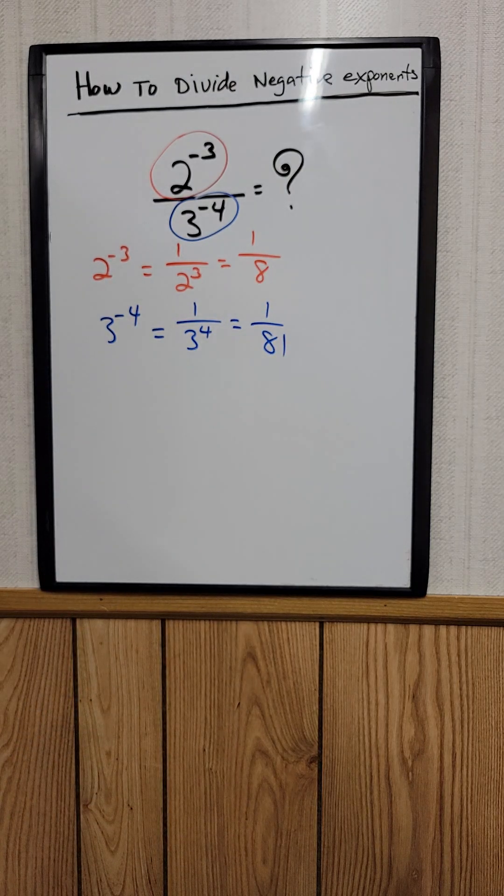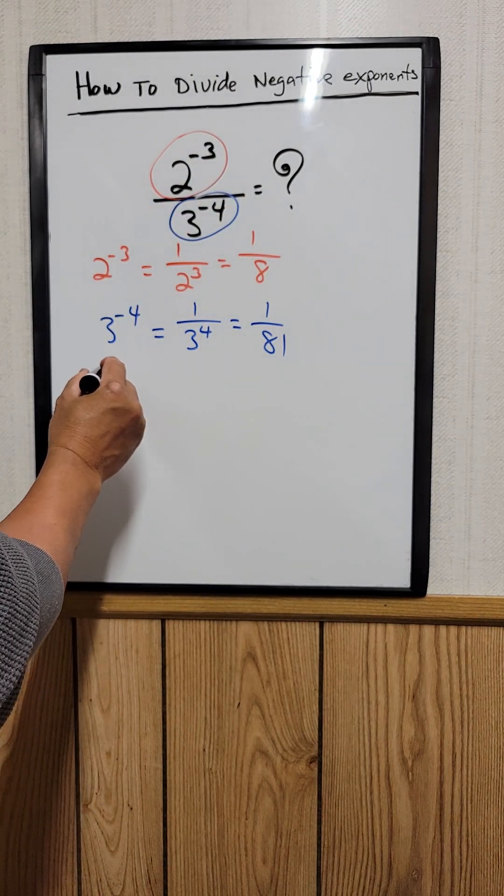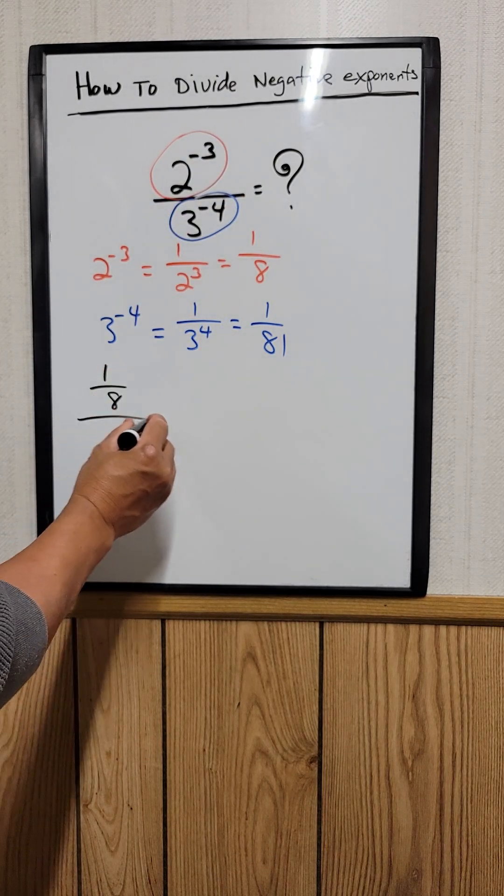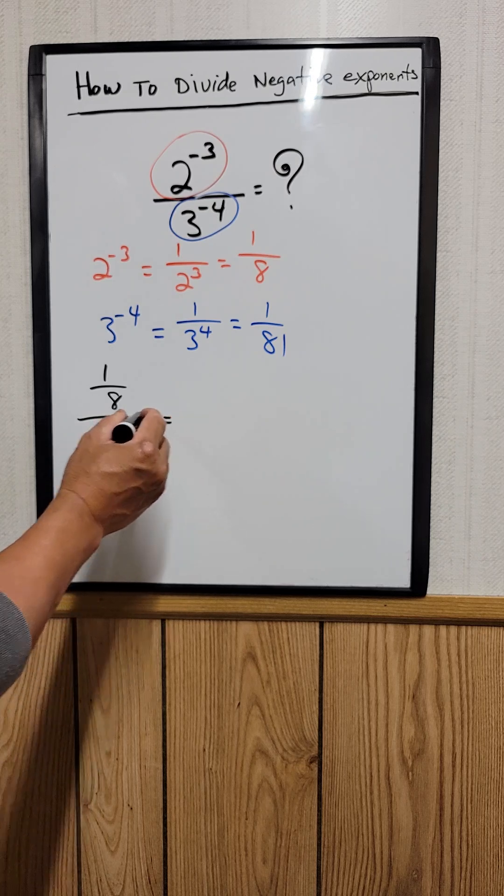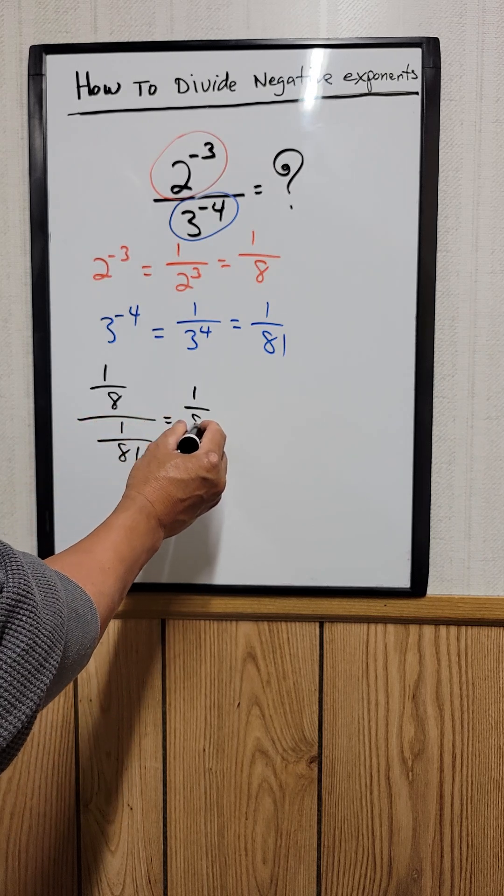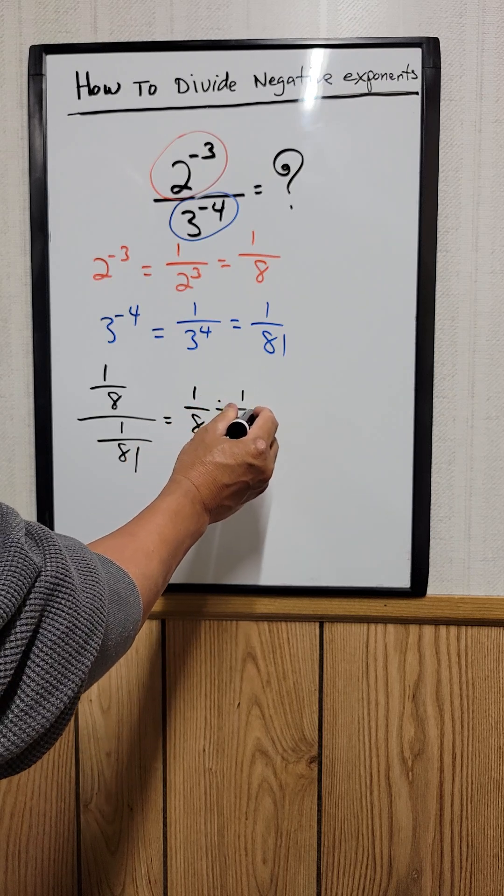Now we can put both of them together. 1/8 divided by 1 over 81. You can rewrite that as 1/8 divided by 1 over 81.